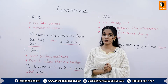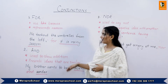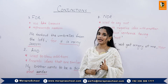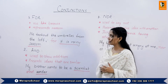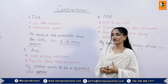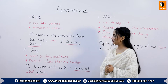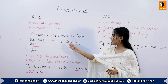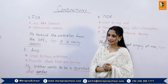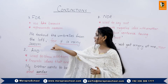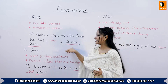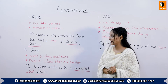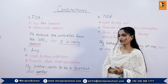Now we look at the coordinating conjunctions and how we can use them in sentences. The first coordinating conjunction is 'for'. 'For' can be used like 'because' and it represents a reason. For example: 'We took the umbrellas from the loft for it is rainy season.' In this sentence, 'for' is representing the reason — it is rainy season.